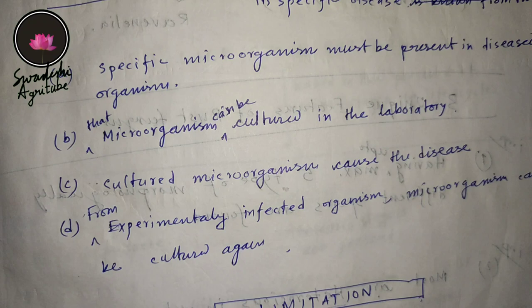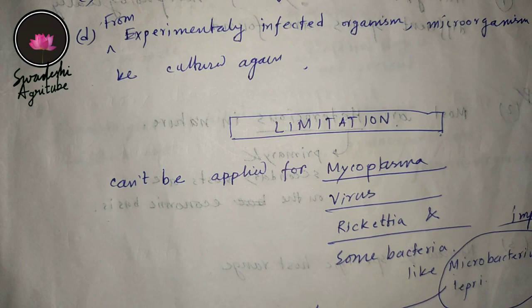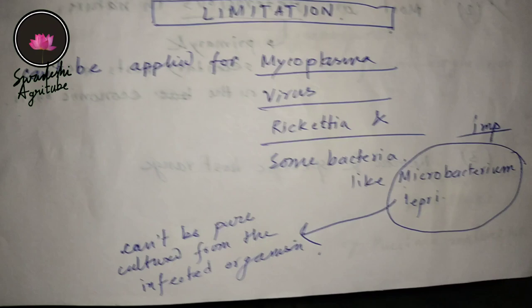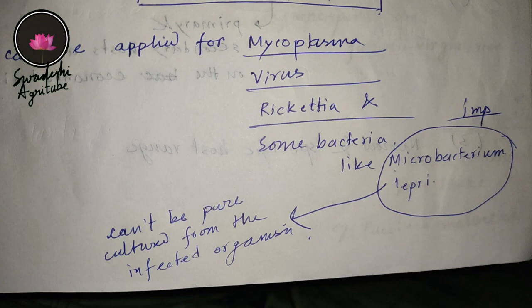If you are able to culture them again, that means the organism is satisfying Koch's postulates. Now there are some limitations — some organisms do not show Koch's postulates, meaning some organisms do not maintain all four points. Those are mycoplasma, virus, rickettsia, and some bacteria.